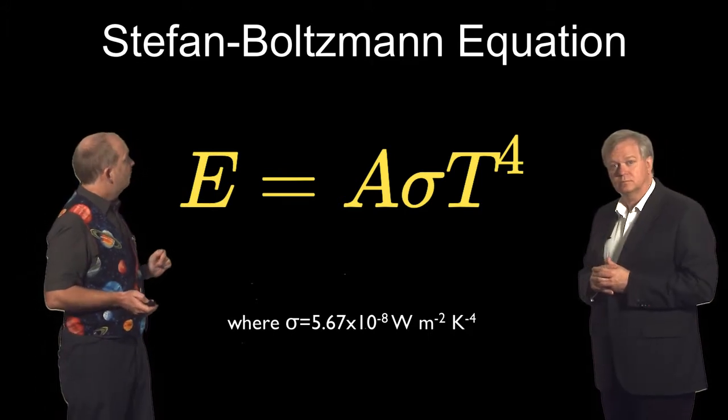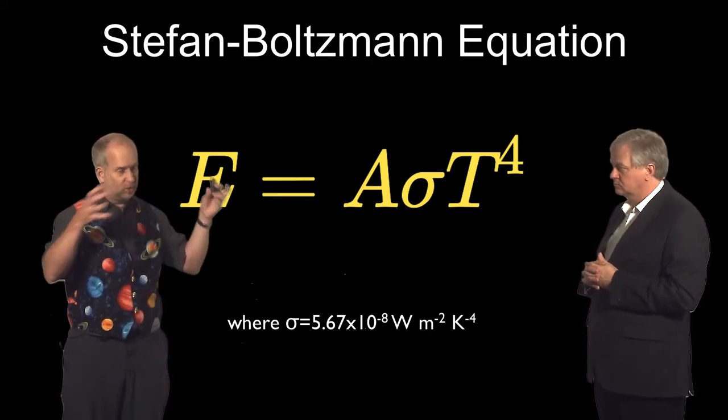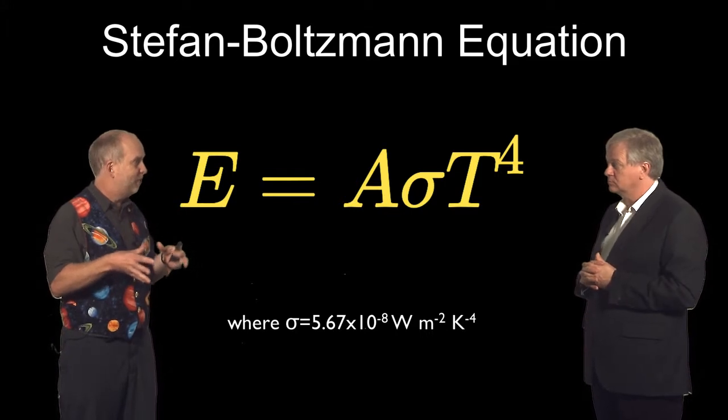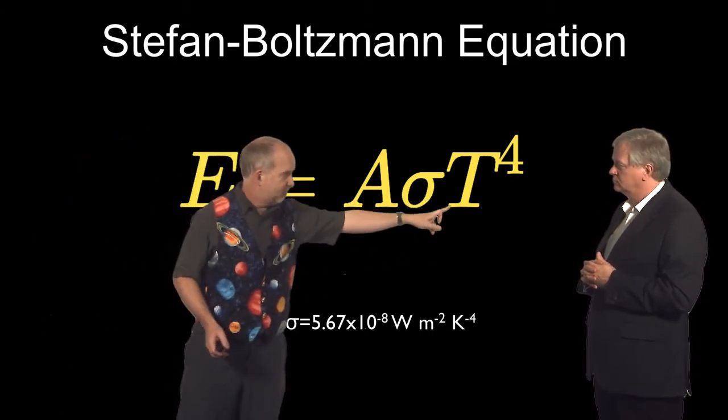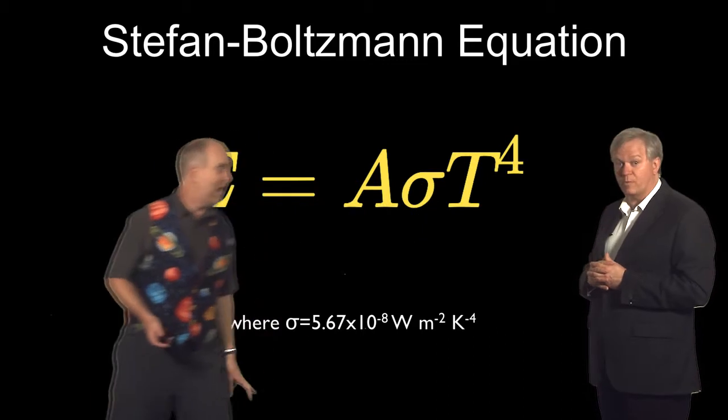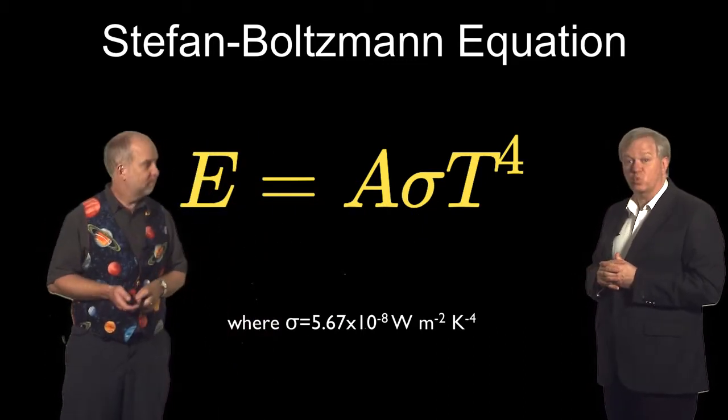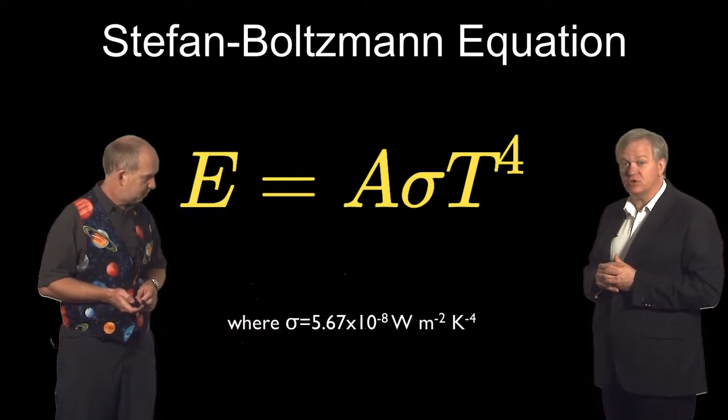The second thing you can derive from that is one we've seen before many times in different courses in the series, which is the Stefan Boltzmann equation. You can add up the total amount of power radiated per unit area, and it depends only on the area and the temperature. And it goes to temperature to the fourth power. So hot things are really bright when it comes to how much energy they put out.